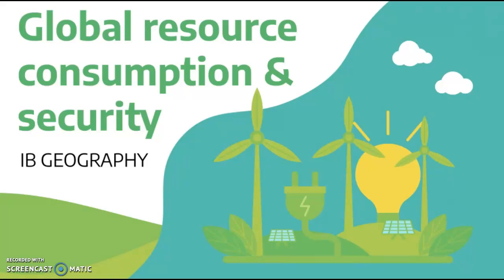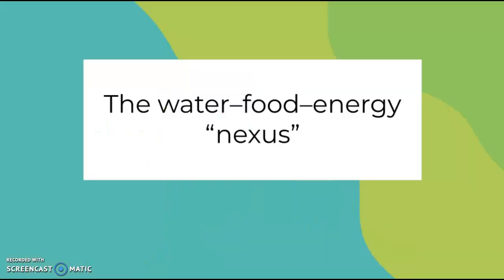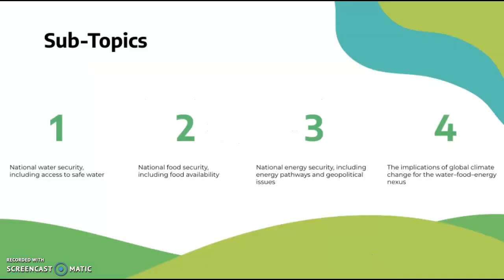This video ties together the water, food, and energy nexus — building on what the last video covered for each component individually, now looking at their interconnections. The subtopics include national water security and access to safe water, national food security including food availability, national energy security including energy pathways and geopolitical issues, and the implications of global climate change for the water-food-energy nexus.